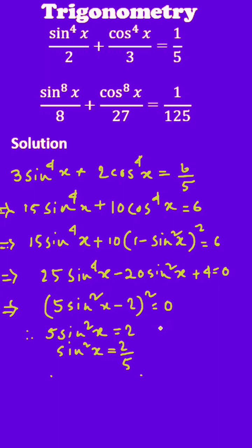You can find the value of cos²x from this. So cos²x = 1 − sin²x = 1 − 2/5 = 3/5. Go to the next page.